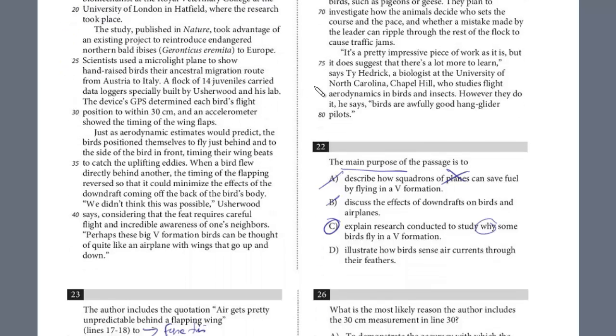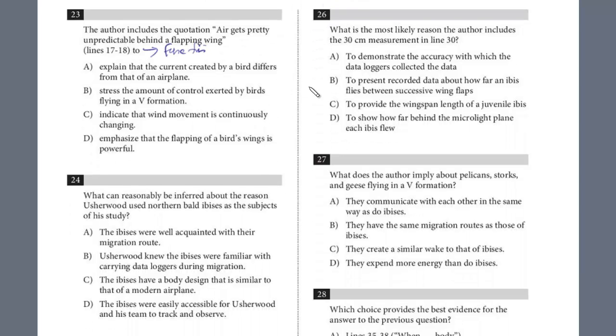Let's look at the answer choices. Explain that current created by a bird differs from that of an airplane - yes, it's unpredictable while the airplane is stable. Another evidence-based question, and the answer is A.